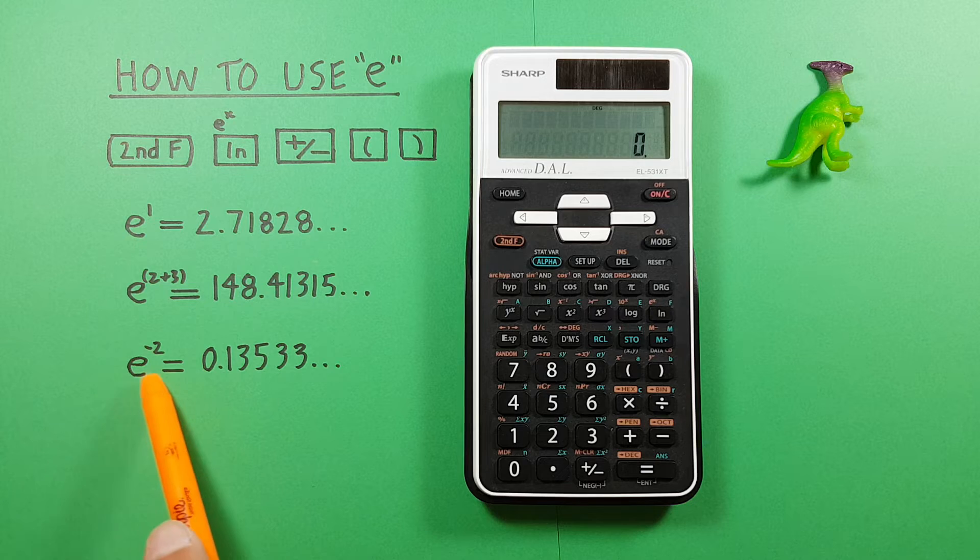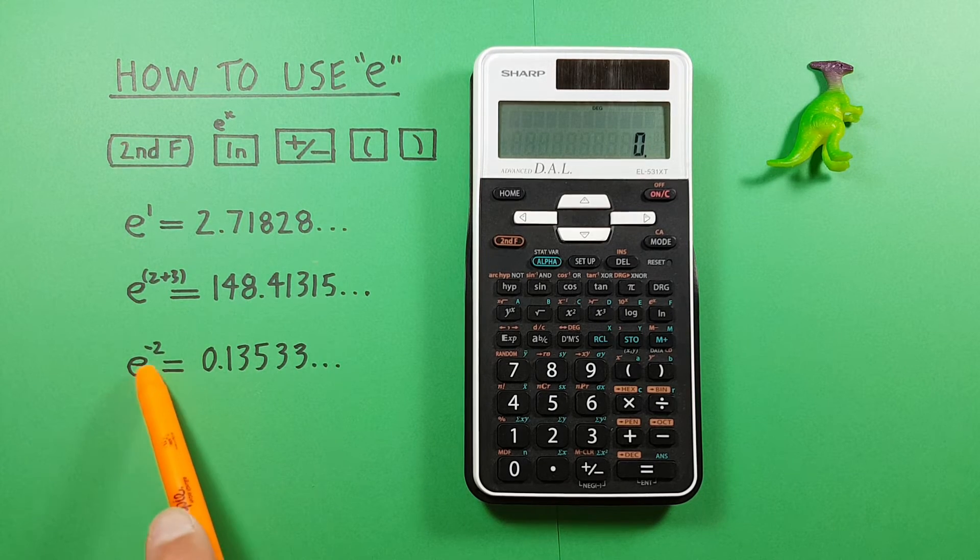We can also do negative exponents, like for example e to the power of negative 2.